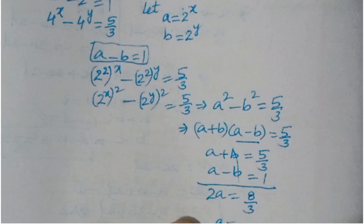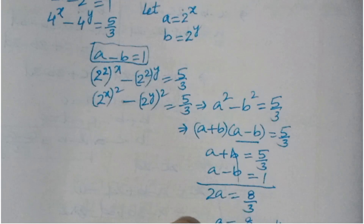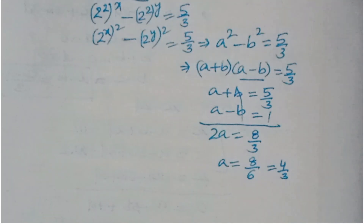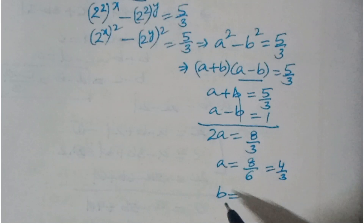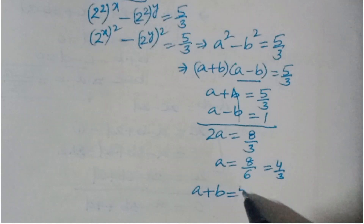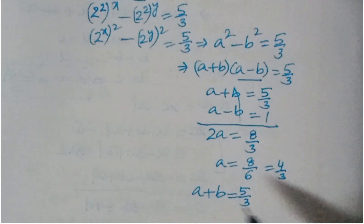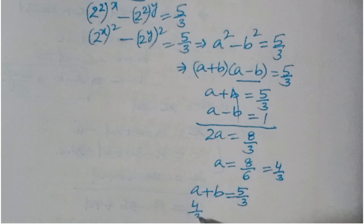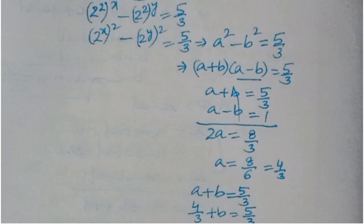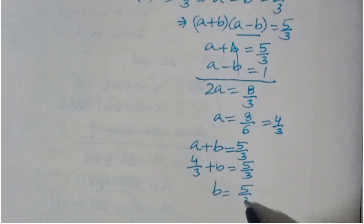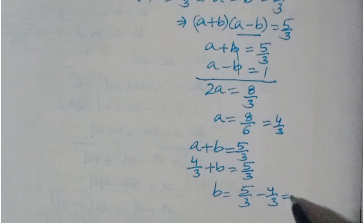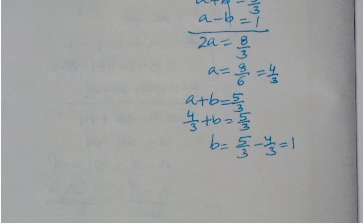We now solve the system: a plus b equals 5/3 and a minus b equals 1. Adding gives 2a equals 8/3, so a equals 4/3. Substituting back: 4/3 plus b equals 5/3, so b equals 1/3.